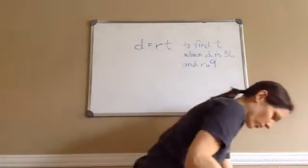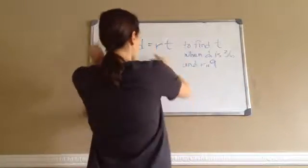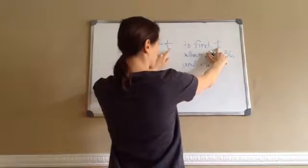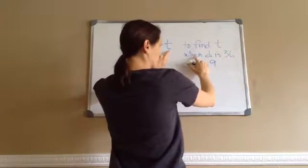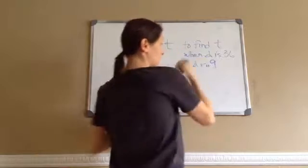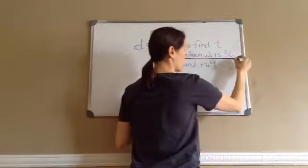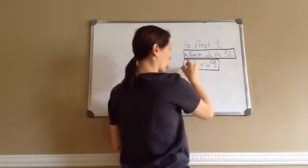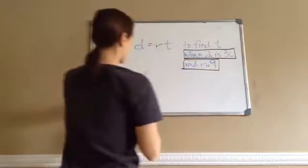Okay, I'm going to use a different word because that one's right now. Okay, they want us to find this. They want us to find T, the answer for T, if or when D is 36 and R is 9. So, they did tell us two things. They told us that D is 36, and they told us that R is 9. So, guess what I'm going to do?